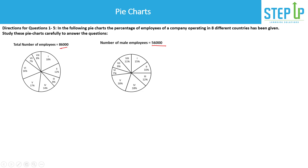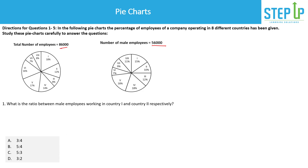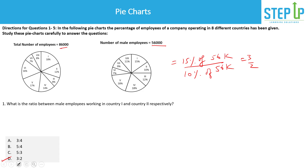Once we understand the data — which is an important step — we move to the questions. The first question asks: what is the ratio between male employees working in country 1 and country 2? This is very easy. It's simply 15% of 56,000 divided by 10% of 56,000. The 56,000 cancels out, so this is just 15 to 10, which is 3 to 2. A two-second question.